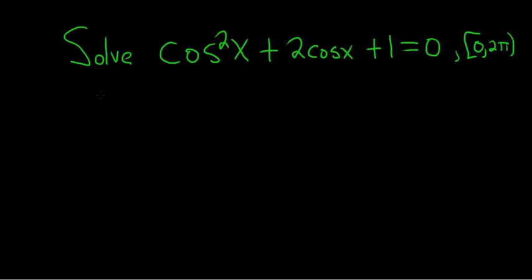Solve cosine squared x plus 2 cosine x plus 1 equals 0 over the interval 0 to 2π. Solution. We have a trigonometric equation equal to 0, so usually what you can do in these cases is try to factor.